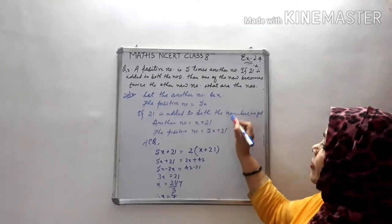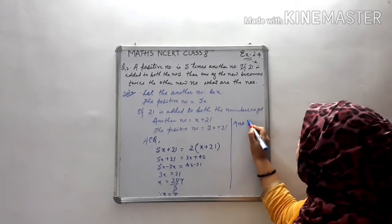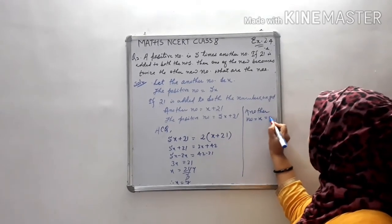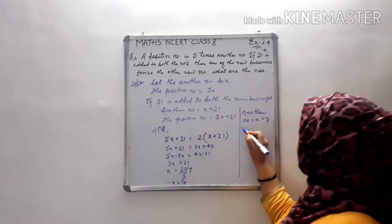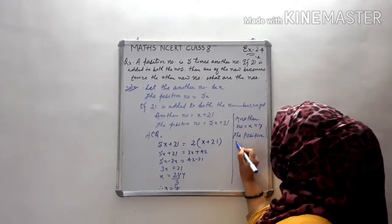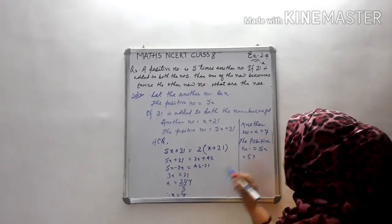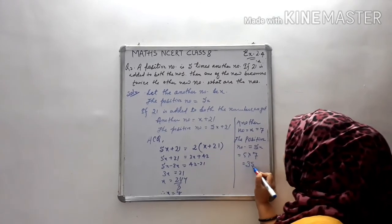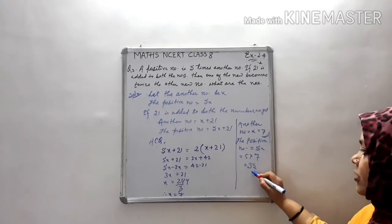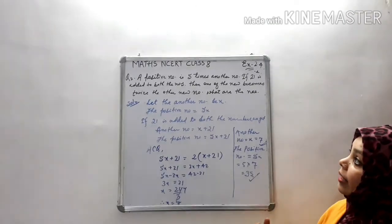So what are the numbers? The other number is x, which equals 7. The positive number is 5x, which is 5 times 7 equals 35. So one number is 7 and the positive number is 35, which is 5 times the other.